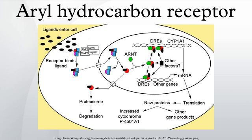The AHR protein contains several domains critical for function and is classified as a member of the basic helix-loop-helix PAS family of transcription factors. The BHLH motif is located in the N-terminal of the protein and is a common entity in a variety of transcription factors. Members of the BHLH superfamily have two functionally distinctive and highly conserved domains: the basic region, which is involved in the binding of the transcription factor to DNA, and the helix-loop-helix region, which facilitates protein-protein interactions.